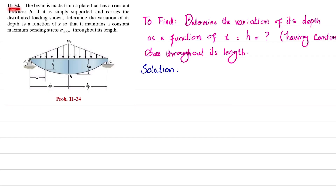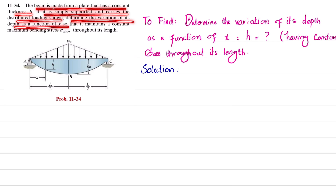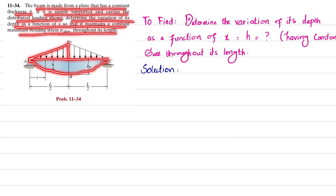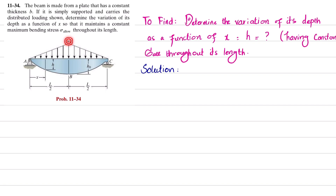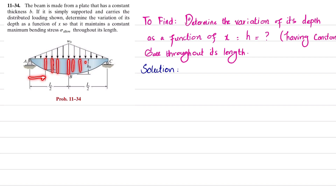Hello, welcome back. Problem 11-34. The statement is: the beam is made from a plate that has a constant thickness b. If it is simply supported and carries the distributed loading shown, determine the variation of its depth as a function of x so that it maintains a constant maximum bending stress throughout its length. This is a simply supported beam that carries a uniformly increasing load from A to B, and then uniformly decreasing load from B to C, with magnitude w-naught and total length L.